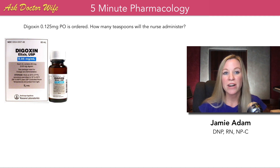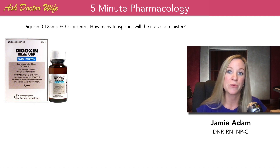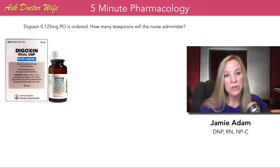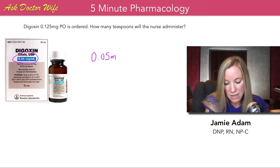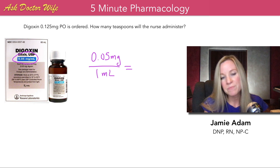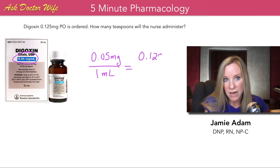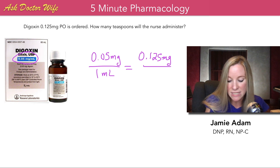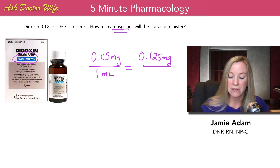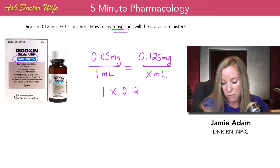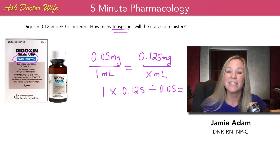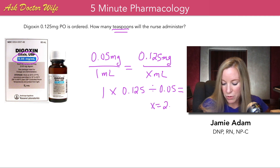Let's look at one more. Digoxin 0.125 milligrams PO, or oral, is ordered. How many teaspoons will the nurse administer? Looking at the label, 0.05 milligrams are in one milliliter of this elixir. Our dose is 0.125 milligrams. We keep our denominators with the same label, so it's X milliliters. Cross multiply and divide: 1 times 0.125 divided by 0.05 equals 2.5 milliliters.